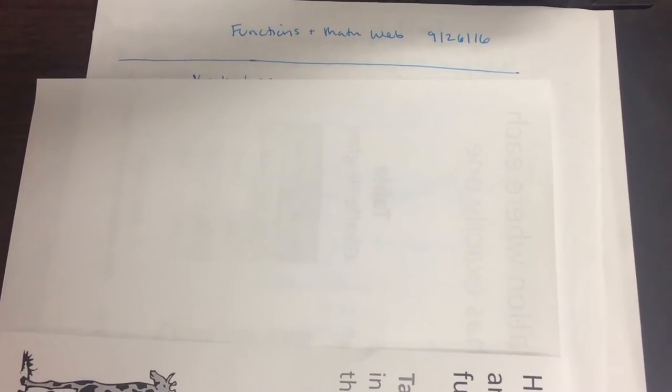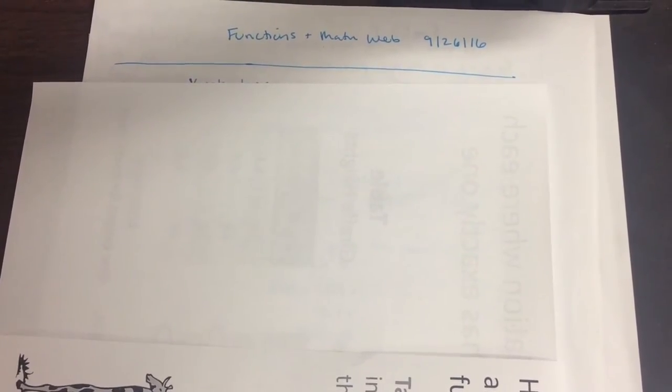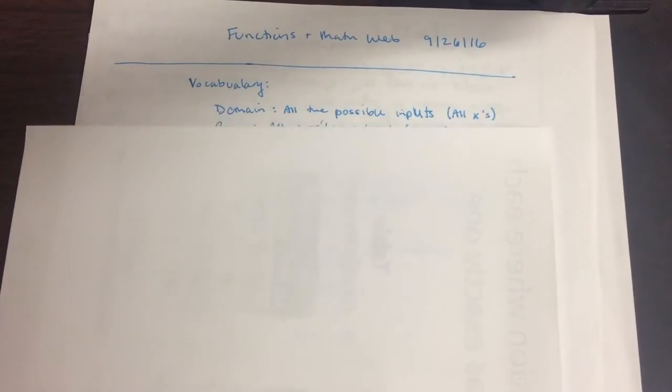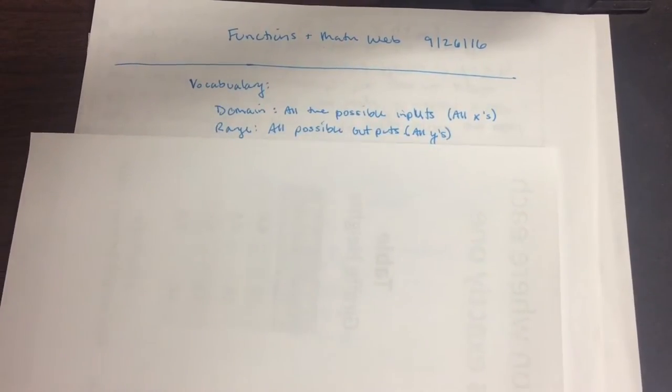Okay folks, I'm calling this Functions in the Math Web, and it is 9-26-16 on Monday. Your vocab bank for today is domain and range, where domain is all the possible inputs, and range is all the possible outputs. So all the X's are domain, all the Y's are range. If you need to pause and write this down, pause and write it down now, because I'm moving forward.